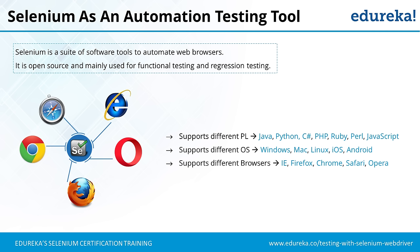Selenium supports different programming languages including Java, Python, Perl, Ruby, C#, and JavaScript. It also supports different operating systems — Linux, Windows, Mac, iOS, Android, Ubuntu — all major operating systems are supported. And it supports different browsers: Internet Explorer, Firefox, Chrome, Safari, Opera, and more. Even if you have Ubuntu on your office laptop and want to practice Selenium at home, Selenium gives support for Ubuntu. All major programming languages and operating systems are covered.